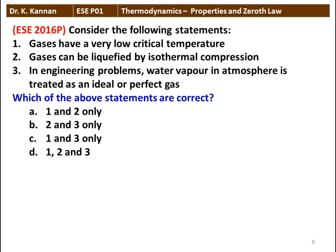Next question: consider the following statements. Gases have very low critical temperature. Gases can be liquefied by isothermal compression. In engineering problems, water vapor in atmosphere is treated as an ideal gas or perfect gas. The correct answer is 2 and 3. Gases can be liquefied by isothermal compression — that statement is correct. In engineering problems, water vapor in atmosphere is treated as an ideal or perfect gas. These two are correct statements; the first statement is not correct.